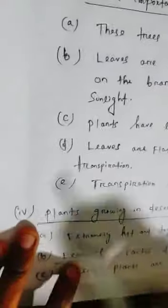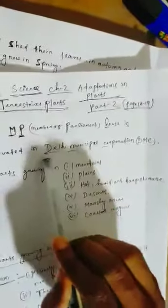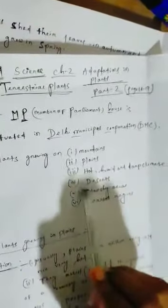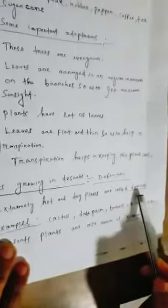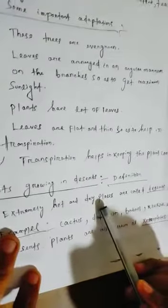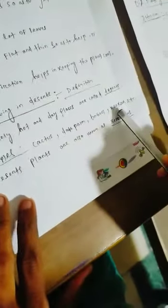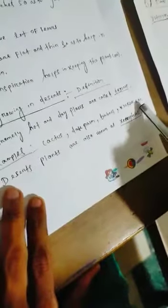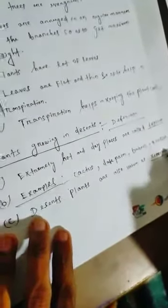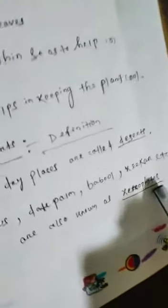Number four in our mnemonic — D stands for Delhi, which means deserts. Plants growing in deserts. Definition: extremely hot and dry places are called deserts. Examples: cactus, date palm, babool, and others. Desert plants are also known as xerophytes.